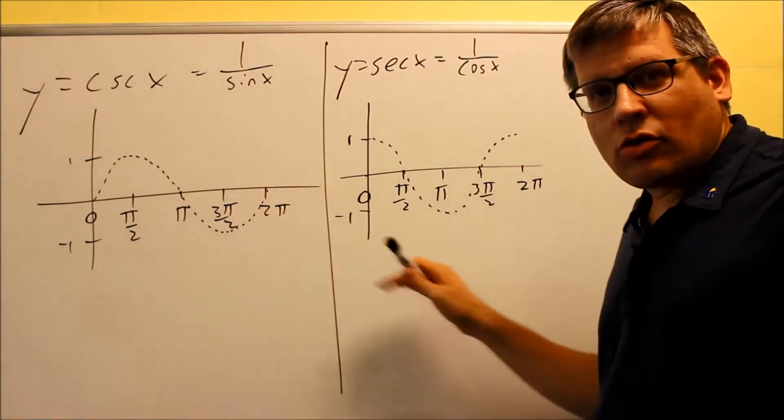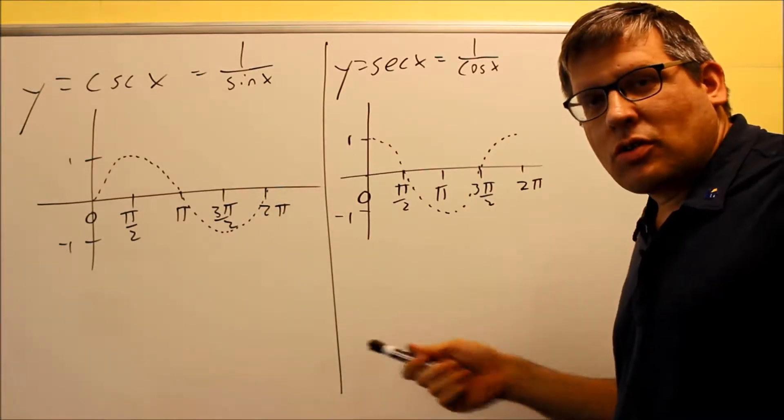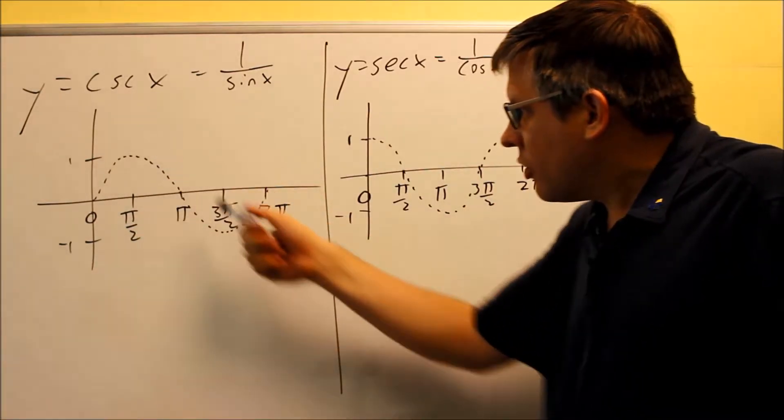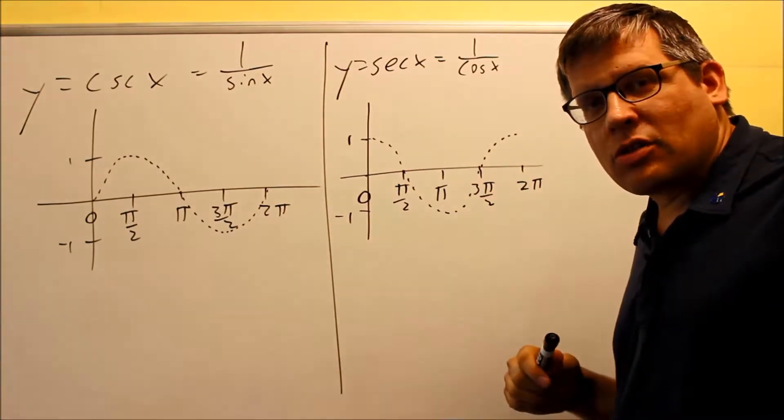The first ones we're going to take a look at are the cosecant and secant graphs because the section right before this one dealt with sine and cosine graphs, so we're going to start with that because it follows from that section.